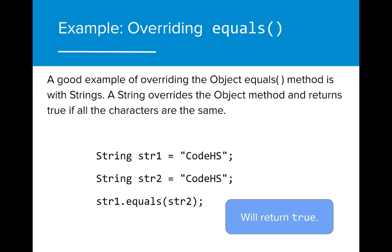A good example where we see the equals method overridden is the string object. A string object's equals method compares each character of the string to determine if they are the same, not just if they are the same objects.